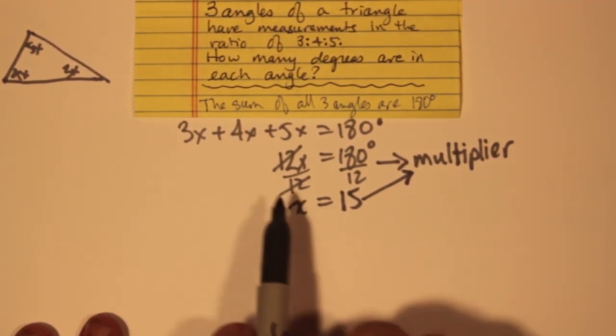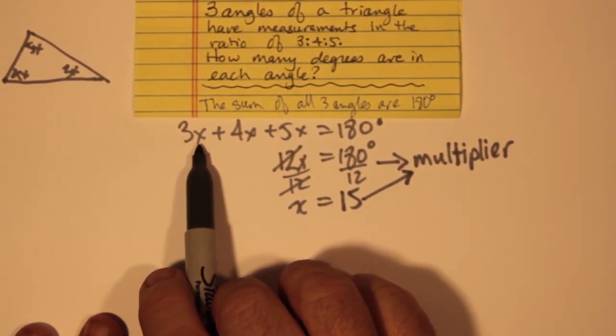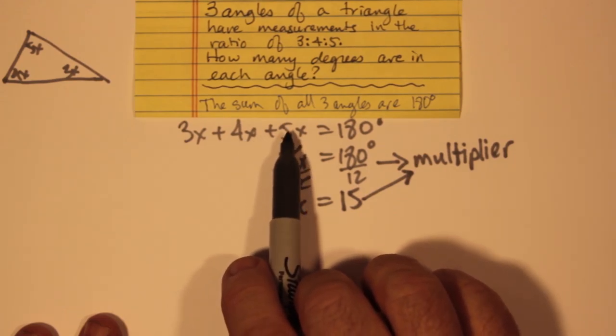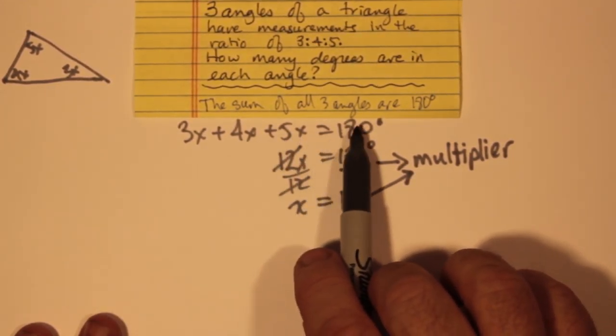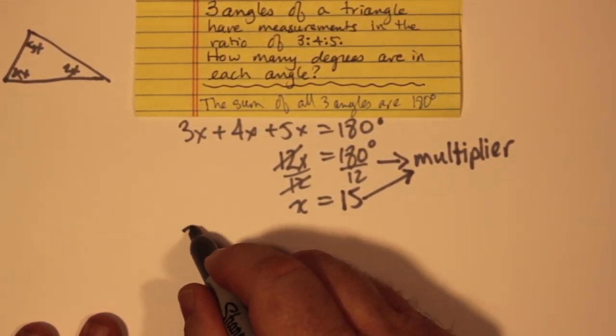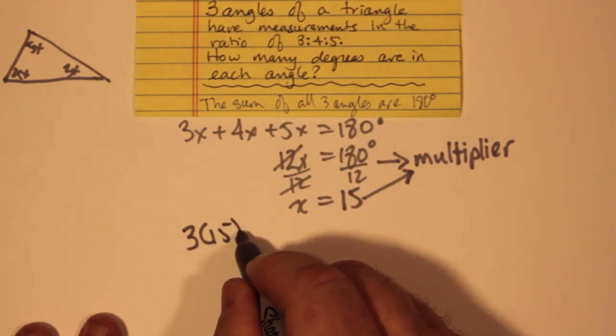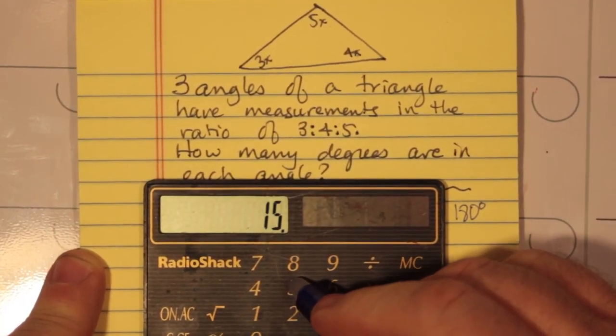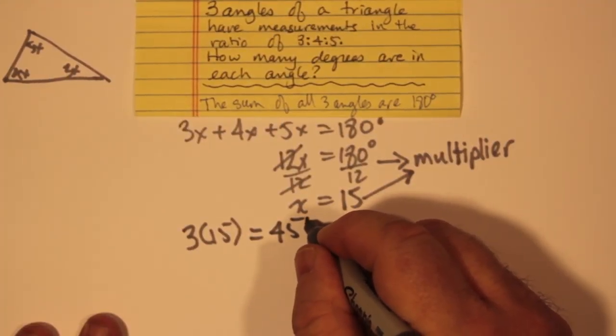That means that 15 gets plugged into this to get this angle, plugged in here to get this angle, and plugged in here to get this angle. And when we add them together, we're supposed to get 180. So we have 3 times 15, and if you work out 3 times 15 on your calculator, you will get 45 degrees.